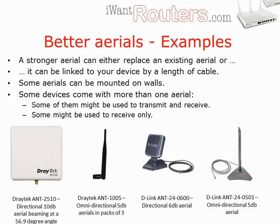Here are a few examples. The Draytek ANT2510 is designed for indoors or outdoors and is a directional aerial, good for bridging one area to another and quite powerful. The Draytek ANT1005 aerials come in a pack of three and are designed to directly replace the aerials on routers such as the Draytek Vigor 2850N. The D-Link ANT260600 is another directional aerial for indoor use, and the D-Link ANT240501 is an omnidirectional aerial for indoor use that can be plugged into a device with a length of cable — useful for repositioning the aerial if the device isn't kept in the best position for wireless use.